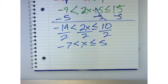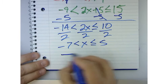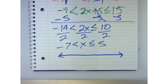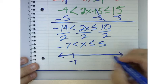Now, here comes the hard part. That's the solution. How do we graph that? Well, first of all, on the number line, there's two numbers we're going to be dealing with. What are those two numbers? Negative 7 and 5.